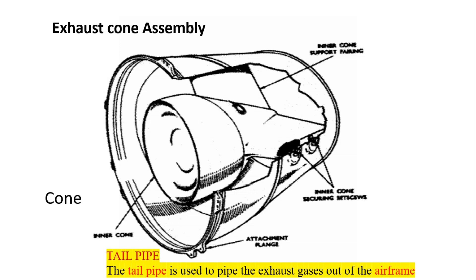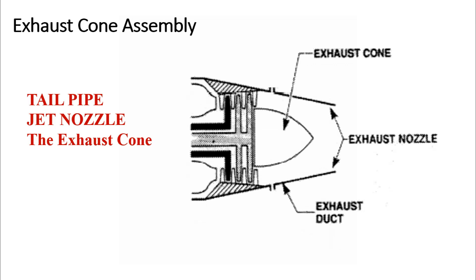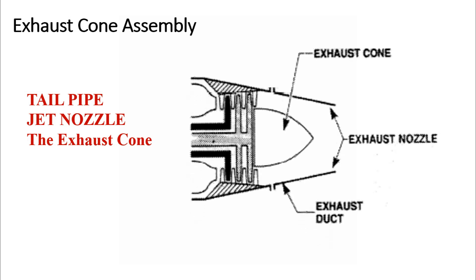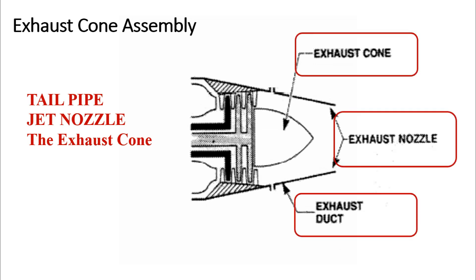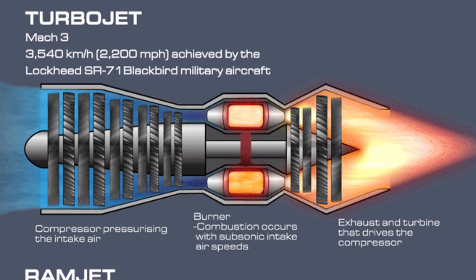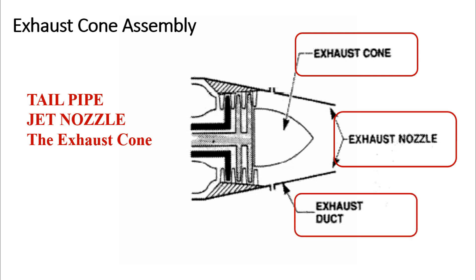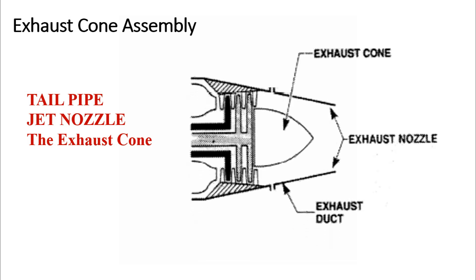Now, let's move on to the tailpipe and the jet nozzle. The tailpipe's primary function is to channel the exhaust gases out of the airframe. However, its use comes at a cost in terms of engine efficiency due to heat and duct losses. In some engine designs, a tailpipe may not be necessary. The exhaust cone, located right behind the turbine wheel, plays a critical role in collecting and expelling discharge gases at the correct velocity. It consists of a stainless steel outer shell and a central cone supported by streamlined struts or fins that straighten the airflow, decreasing velocity and increasing pressure.